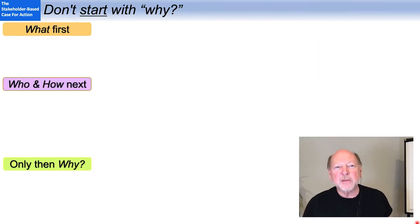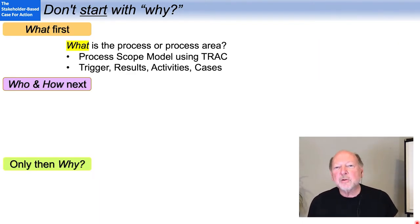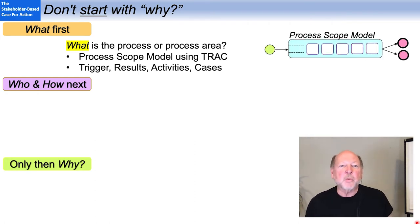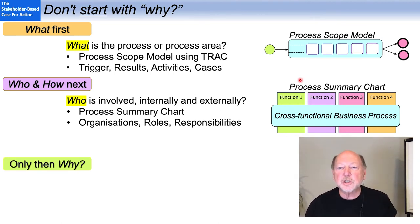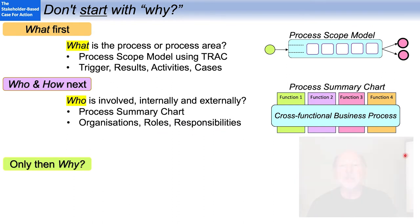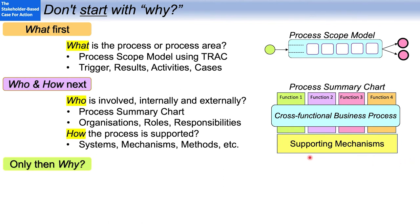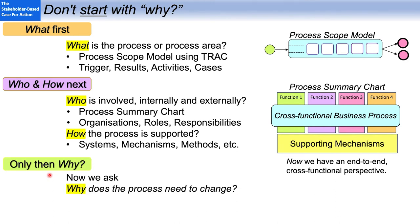When I say 'what first,' I mean what is the process or process area we believe is the source of concern, and we'll express that with a process scope model using the TRAC framework. Next, I'll ask who is involved in the process, both internally and externally, expressed with a process summary chart showing involved organizations and eventually individual job roles. Then I'll articulate how the process is currently supported — what systems and mechanisms enable it. At that point, we have an end-to-end, cross-functional perspective, and it's safe to ask why the process needs to change.